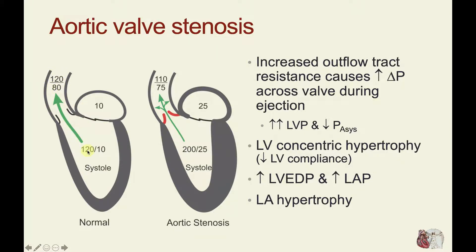Note that in a normal heart, the peak systolic pressure in the ventricle is very similar to the systolic pressure in the aorta — I'm showing the same numbers here for simplicity. The left atrial pressure will be essentially the same as the end diastolic pressure in the left ventricle.